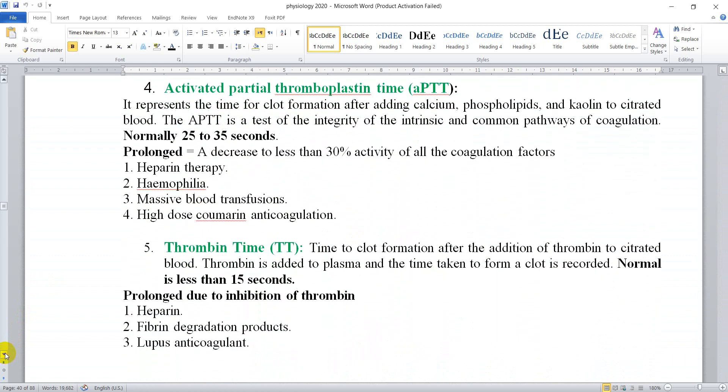The other factor is Activated Partial Thromboplastin Time, or APTT. It represents the time for clot formation after adding calcium, phospholipids, and kaolin to citrated blood. APTT is a test of integrity of the intrinsic and common pathway.